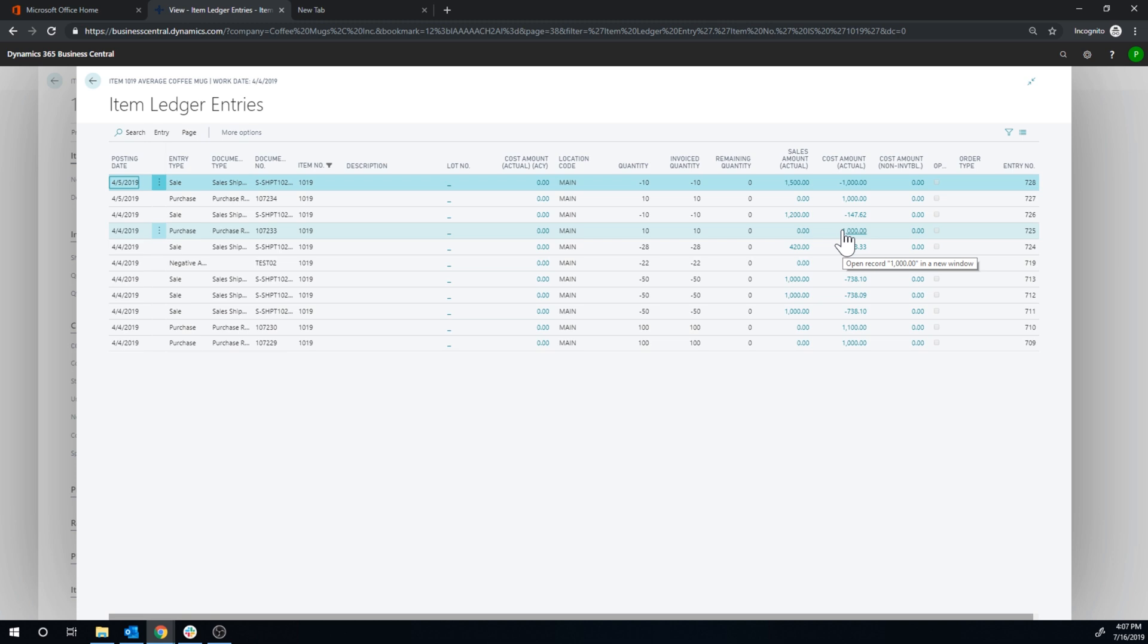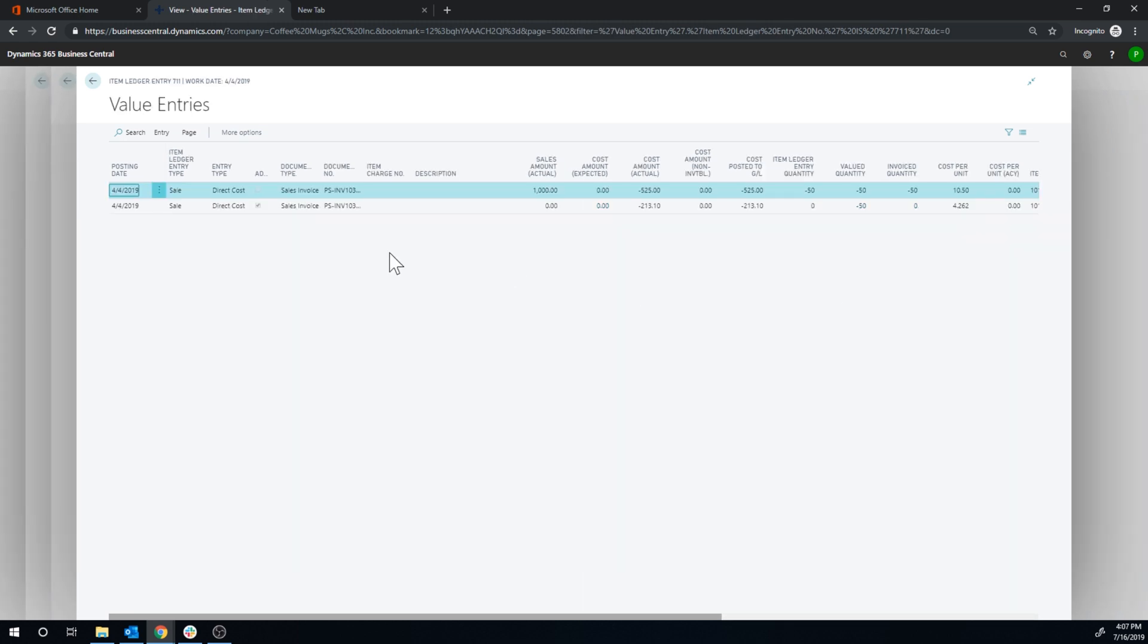And then we buy the item at 1000 for 10, so $100 a piece, way more expensive to throw it off. And then we sell it again. And you can see the cost is definitely not $100 per piece. It's actually $14 per piece. But all of these other entries here got adjusted. So if I click on the sale, you can see that there is an adjustment entry to make up for this huge cost or the very expensive coffee mugs that I had.